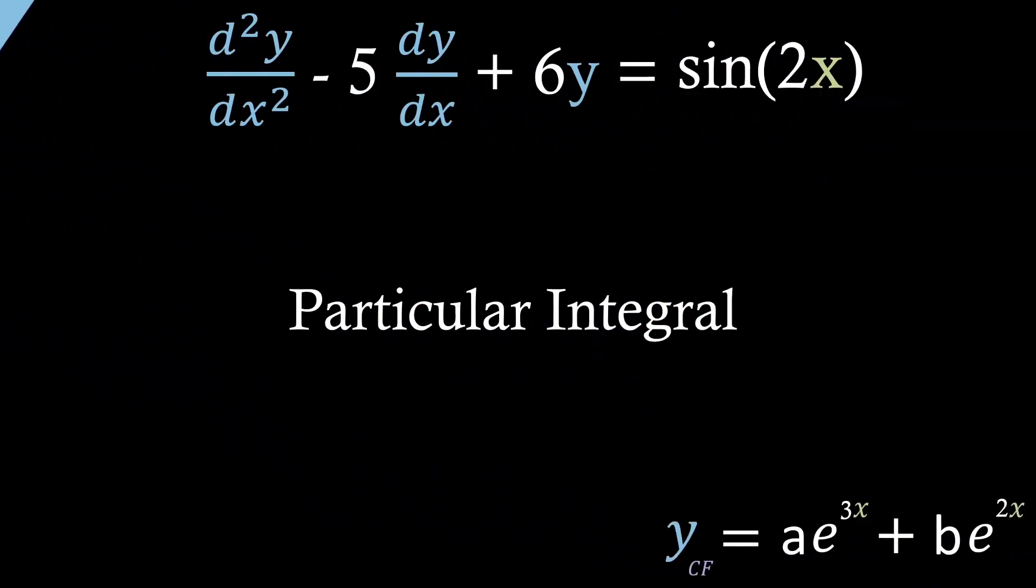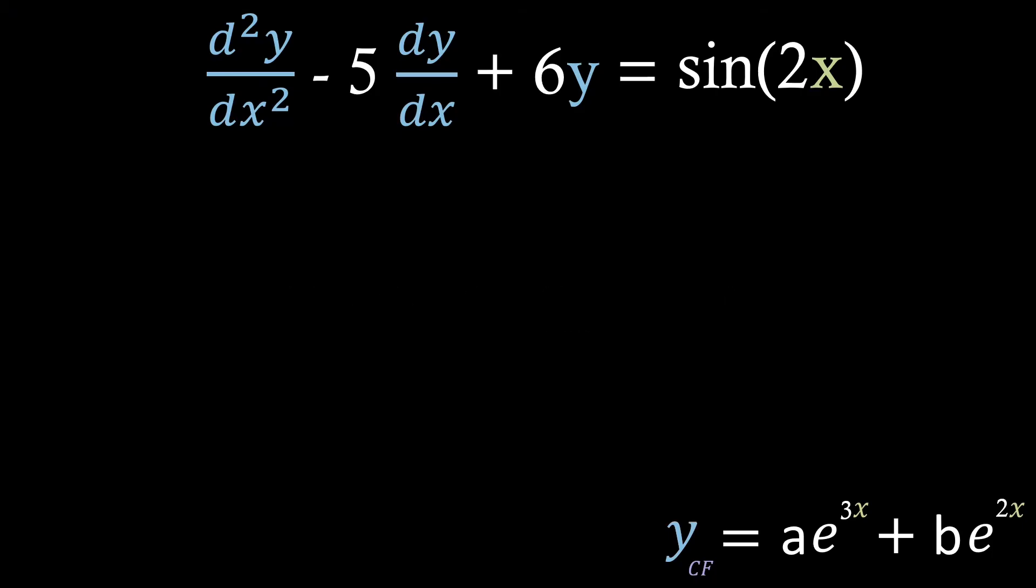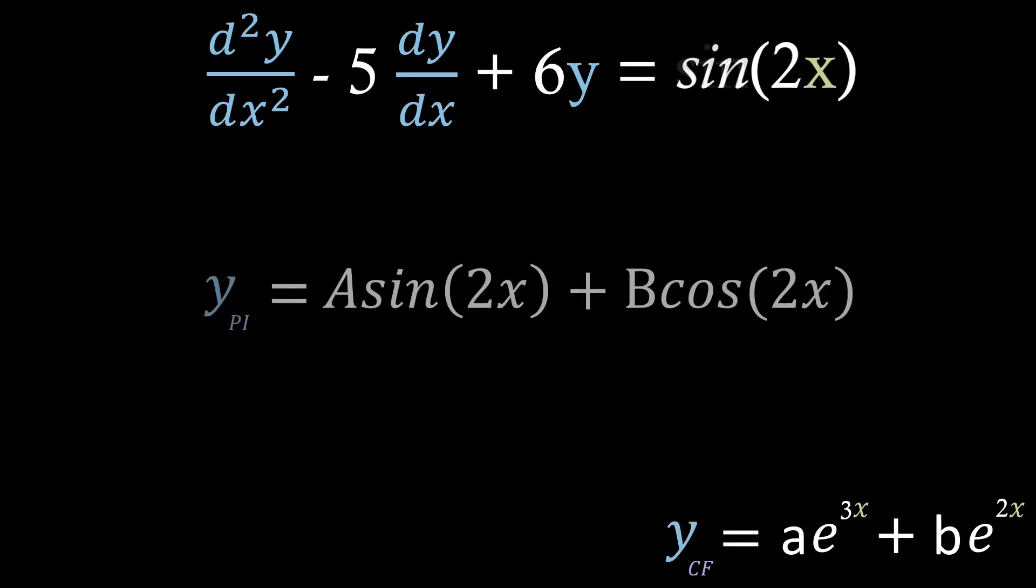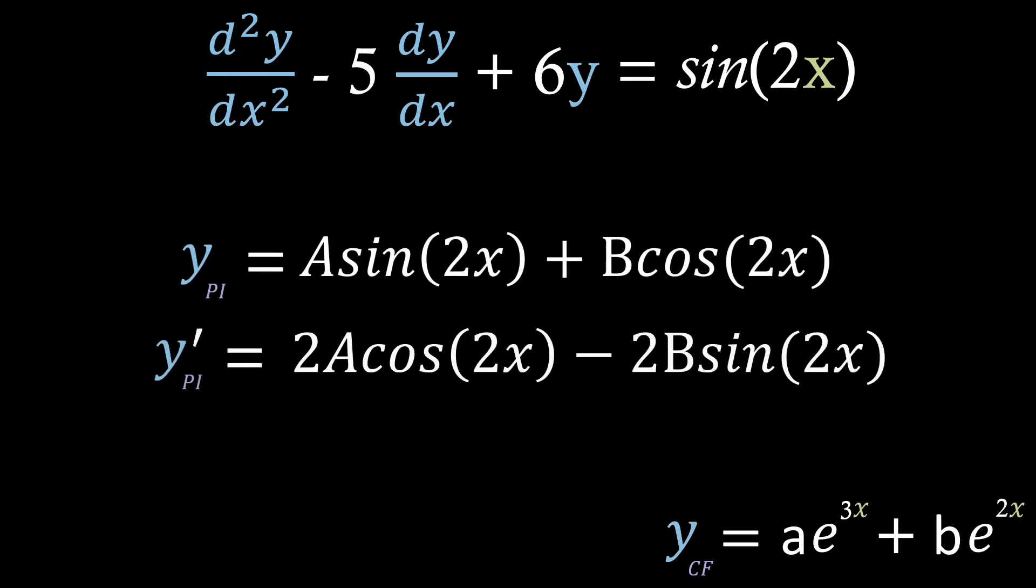Going back to our equation, we see on the right hand side we've got a trig function. Therefore we're going to try a solution of this form, just replacing alpha with 2, and we'll change the names of our constants. As we're going to try and substitute this solution in, we need to take its first and second derivative, so let's do that.